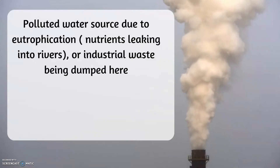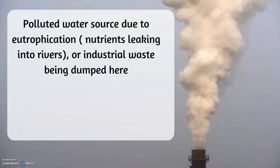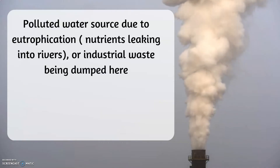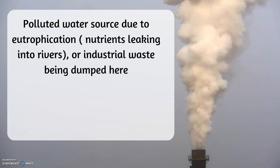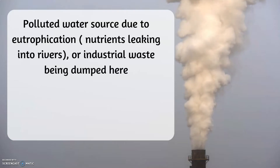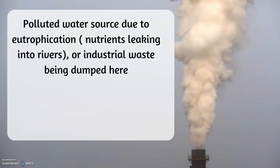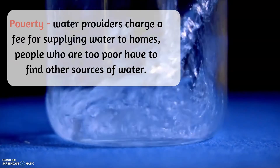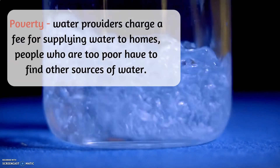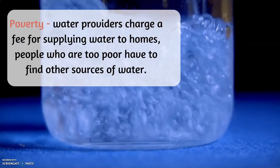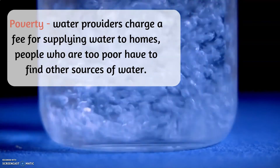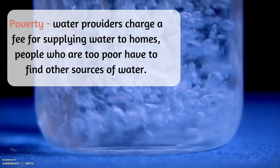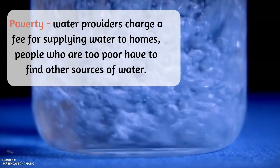Polluted water sources due to eutrophication — where nutrients leak into rivers and cause algae to grow, or industrial waste is dumped there — also reduce water security. Poverty is another factor, as water providers charge a fee, and people too poor to pay must find other sources of water.